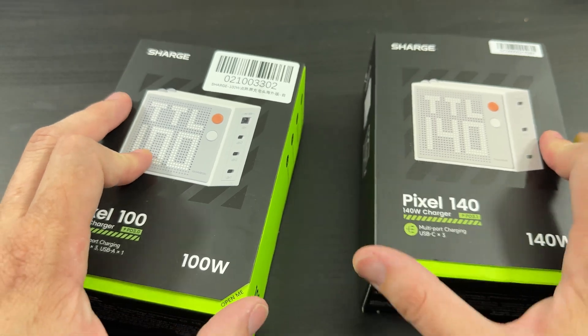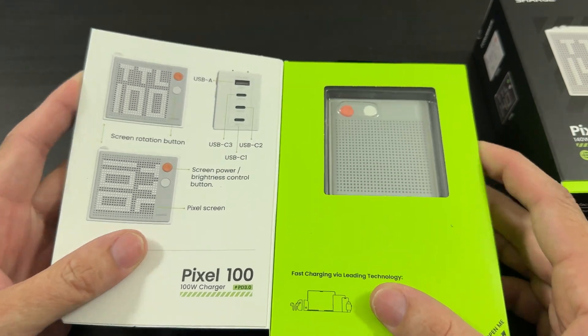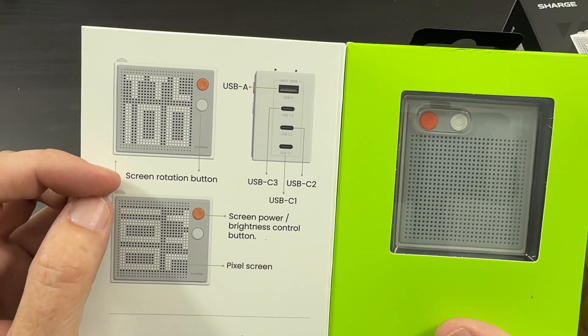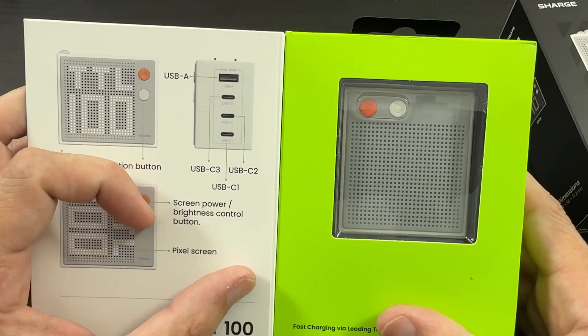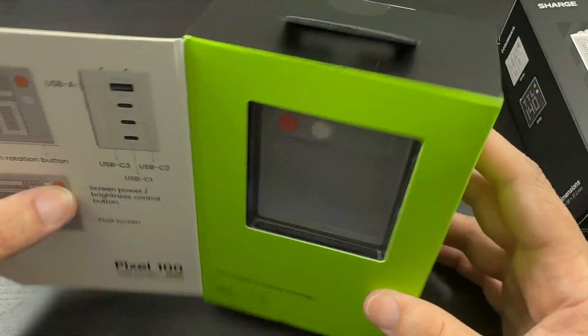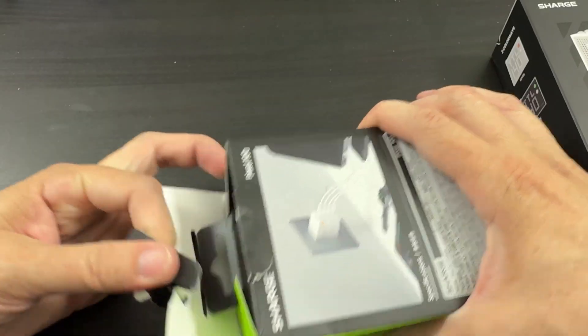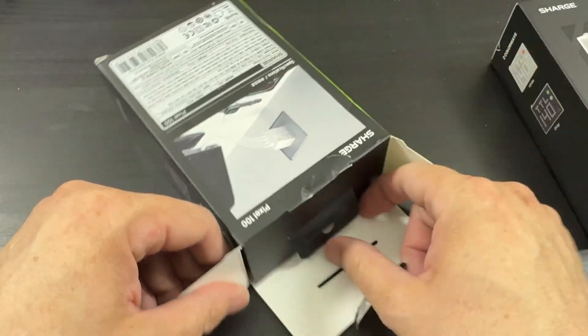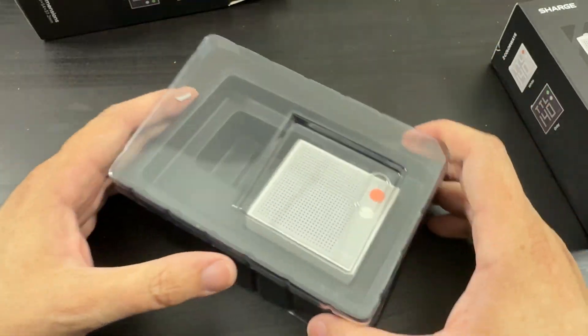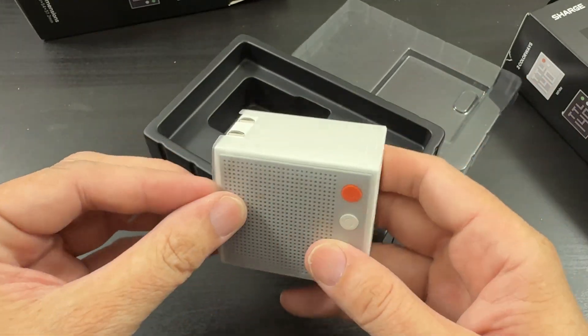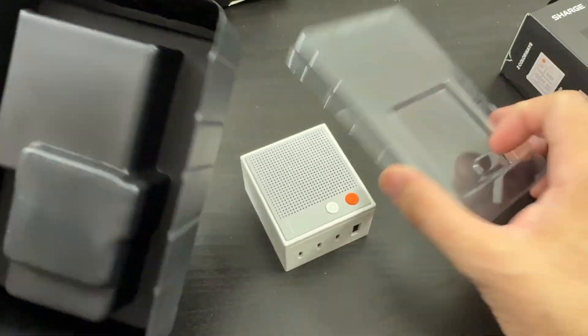All right. Let's start with the lower end one here, the 100-watt. So you open it up and you get presented with screen rotation buttons. You can flip the screen around, which is pretty cool. And then we have the USB-Cs, the pixel screen, and then we get inside the box. Okay. We've got the 100-watt guy. It's with some film around it.